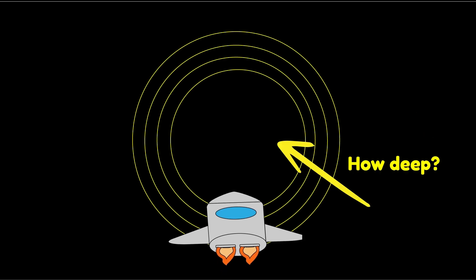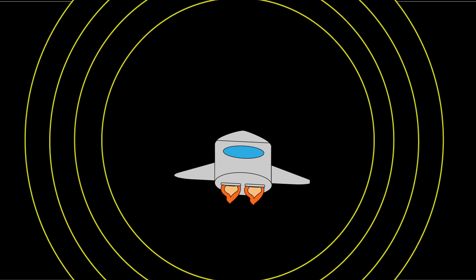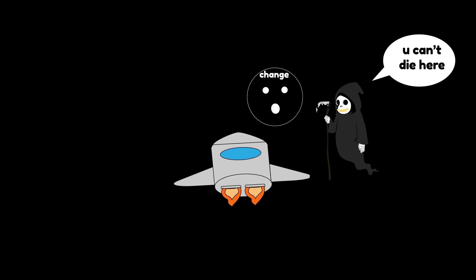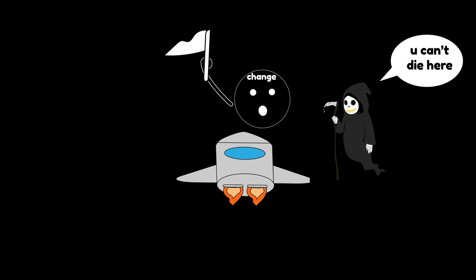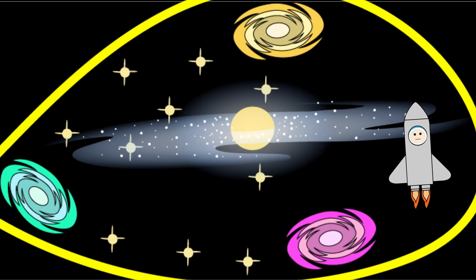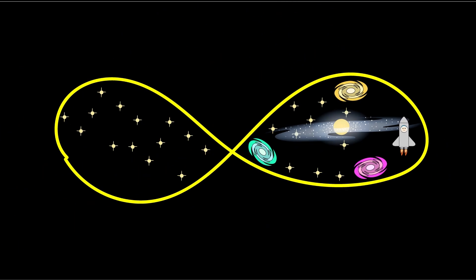You wanted to see how deep space really goes. Turns out it goes until meaning runs out. You can't even die here. Death requires change. And change gave up millennia ago. The final truth of deep space isn't violence. It's apathy. Funny thing about infinity. It's not about size. It's about how small it makes you feel.